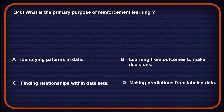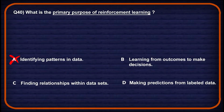Let's move on to question number 40: what is the primary purpose of reinforcement learning? Option A: identifying patterns in data — pattern recognition is typical of supervised or unsupervised learning, so wrong. Option B: learning from outcomes to make decisions — RL focuses on decision-making through feedback-driven learning, so this might be a potential answer. Option C and D: finding relationships within datasets — these are typical of supervised and unsupervised learning, not reinforcement learning. Option B will be the correct one.